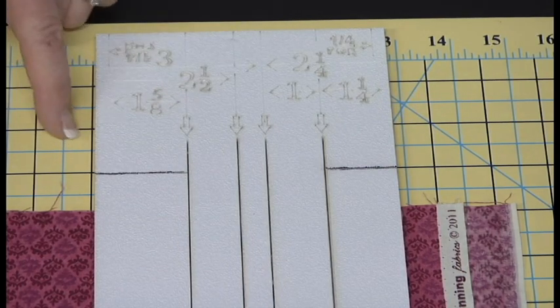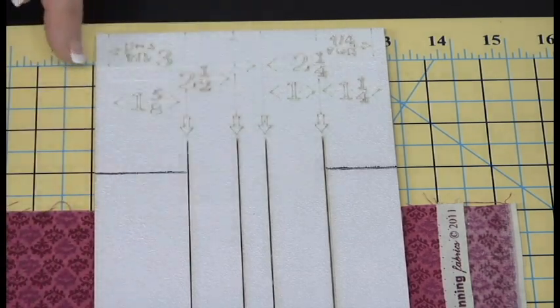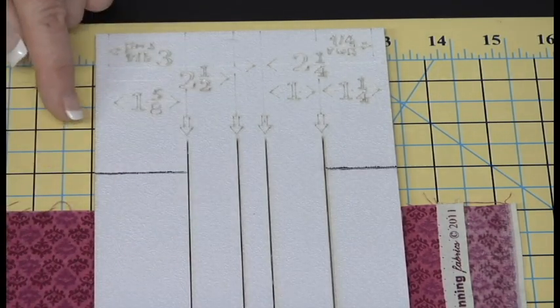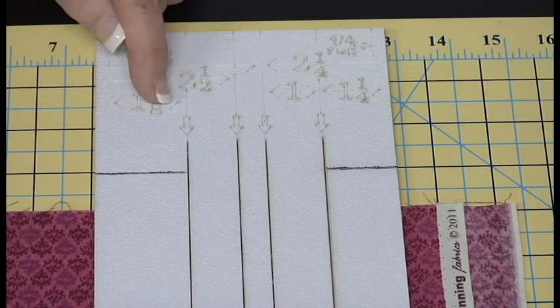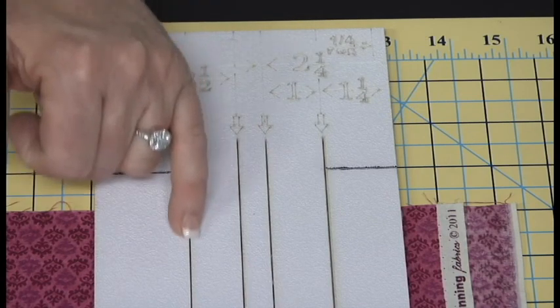Now if you're right-handed, right-handers are going to look from the right side in. So if I'm looking at for right-handed from the right side in, if my blade goes in here from arrow to arrow, I have one and five-eighths right here.